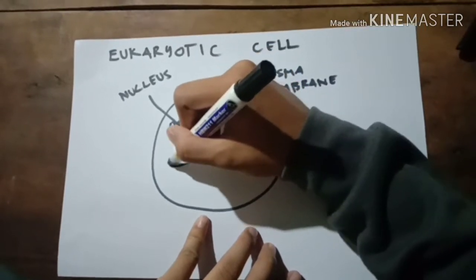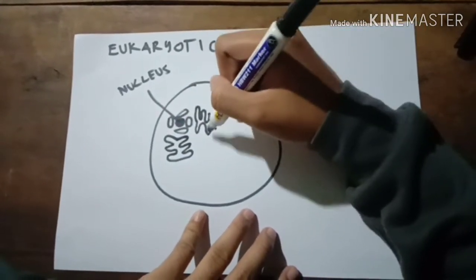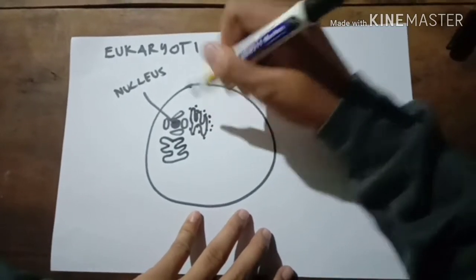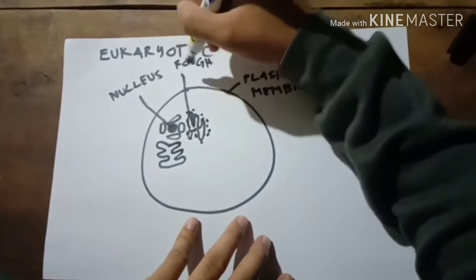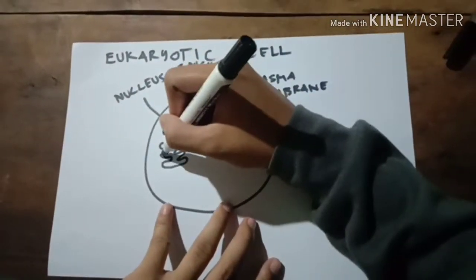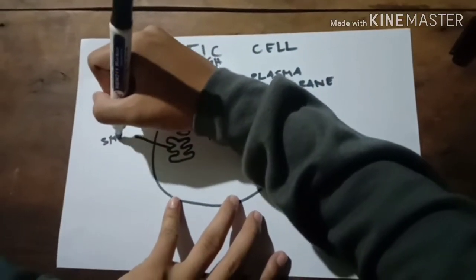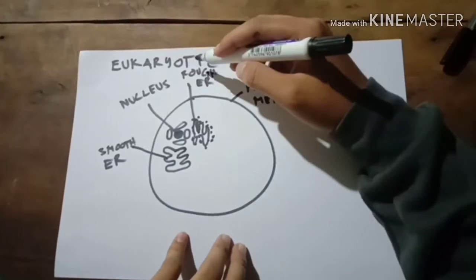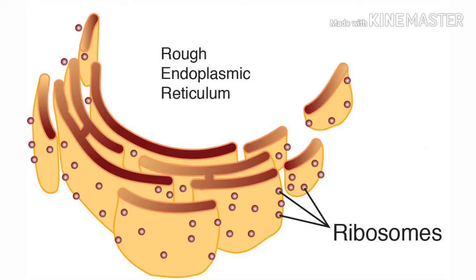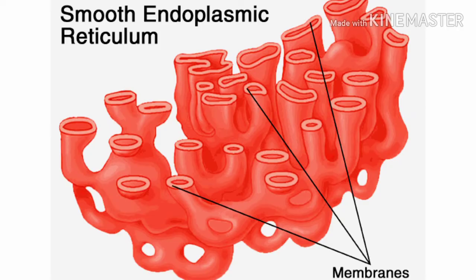There are two types of endoplasmic reticulum. We have the rough ER, or rough endoplasmic reticulum, and this is the smooth endoplasmic reticulum, or smooth ER. One of the main functions of the rough ER is to produce and process specific proteins. The main function of the smooth endoplasmic reticulum is to make cellular products like hormones and lipids.